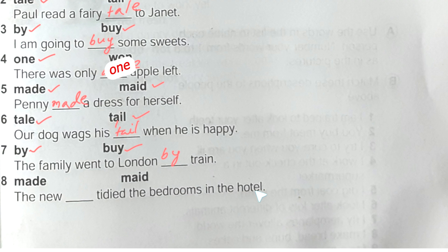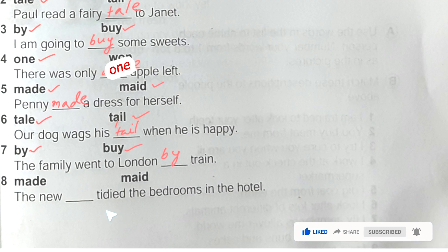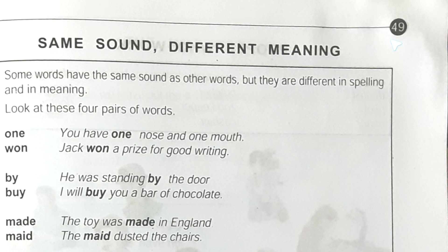Number eight: the new dash tidied the bedrooms in the hotel. Here 'made' means to make something, but here one person is cleaning or tidying the bedroom. So by the word 'maid' we understand a person. The answer here will be 'maid.'